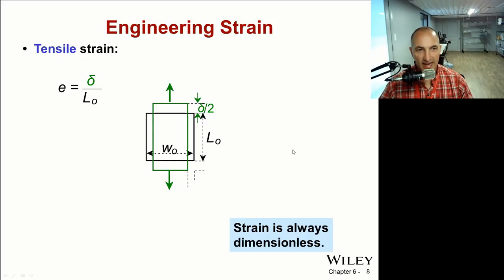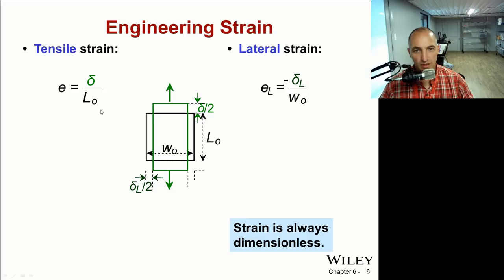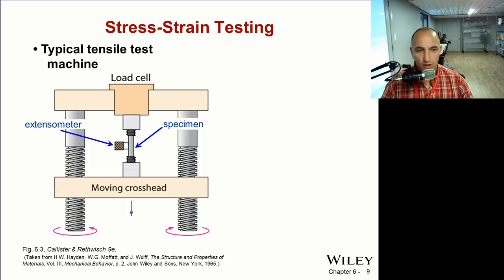Engineering strain, another term that we're going to pick up. Tensile strain epsilon is equal to delta L over L_0, so that's the change in length over the original length. We call that tensile strain, and strain is a dimensionless parameter here. You can see it could be in meters over meters, that's going to be dimensionless. The lateral strain is the change in dimension in the lateral direction, so that's negative delta W over the original width W_0.